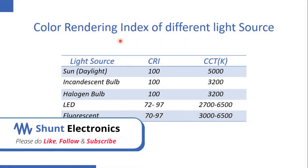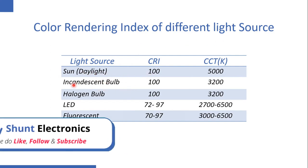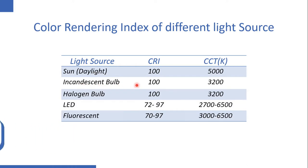Let's see the CRI of different light sources. The CRI of sunlight or daylight is 100, for incandescent bulbs it is 100, for halogen bulbs it is 100, and for LEDs it ranges from 70 to 97.